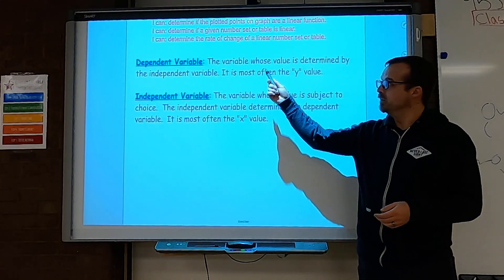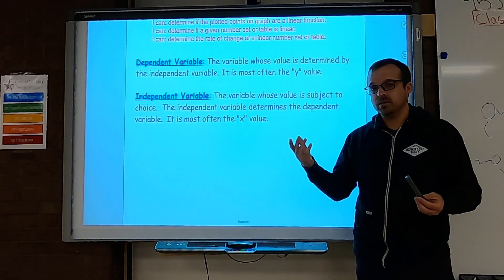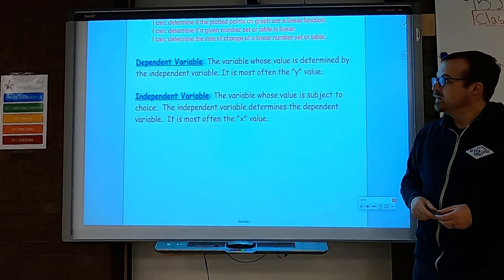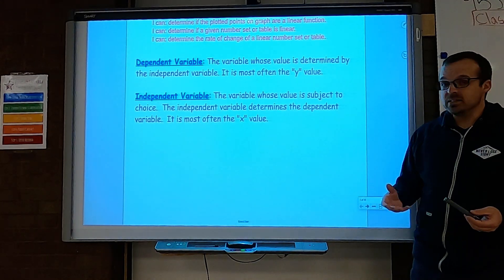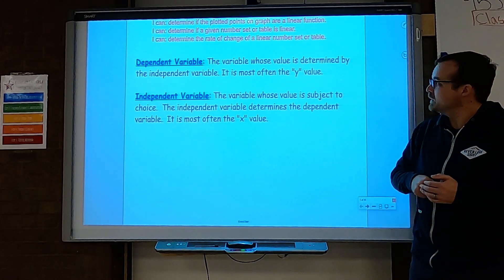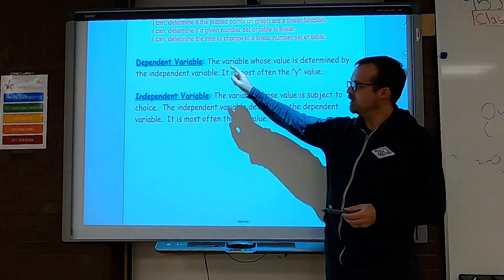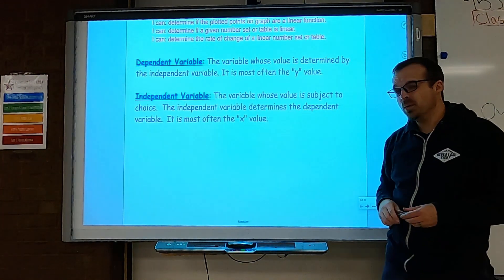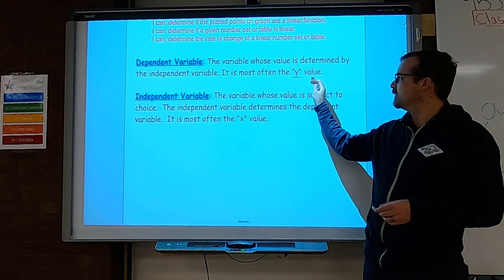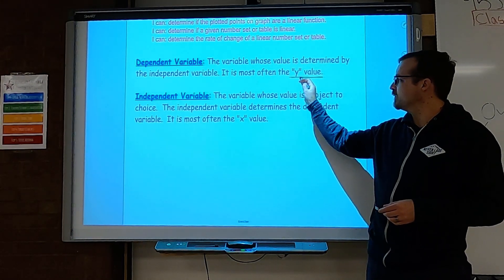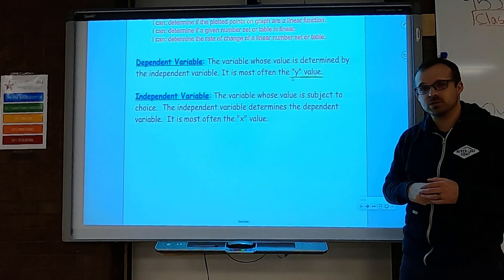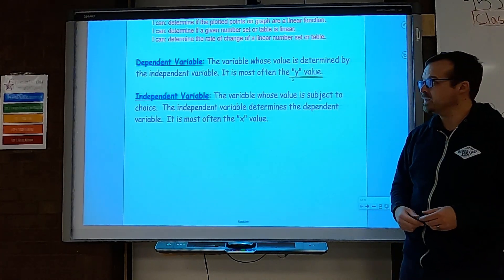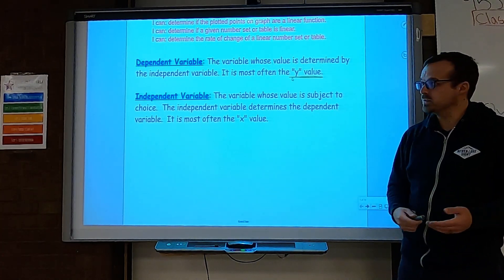The first thing is a dependent variable. You should probably pause the video and write this down so you have the definition. A dependent variable is the variable whose value is determined by the independent variable, which we'll get to in just a second. It is most often called the y-value. In the videos and lessons we just went through, we talked about y-values being the range — that's basically the dependent variable.